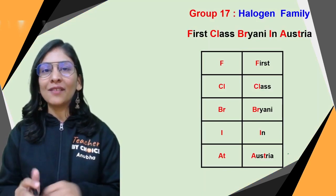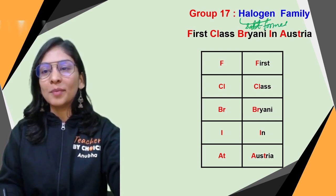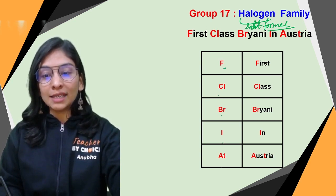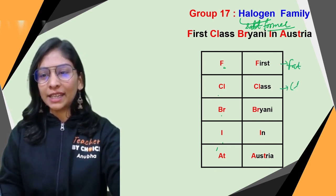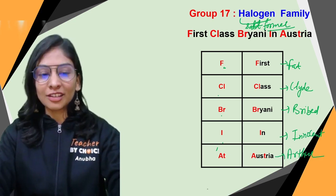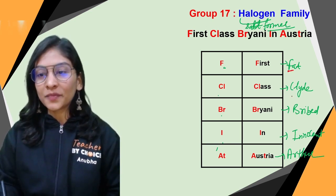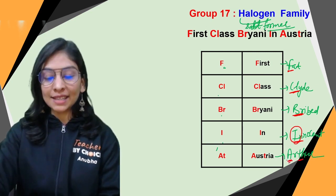Group 17 — the halogen family — 'halo' means salt and 'gen' means former, so they combine with metals to give salts like sodium chloride. Members are Fluorine, Chlorine, Bromine, Iodine, Astatine. Remember: 'First Class Biryani In Austria' — F, Cl, Br, I, At — or 'Fat Clyde Bribed Innocent Arthur' — F, Cl, Br, I, At.